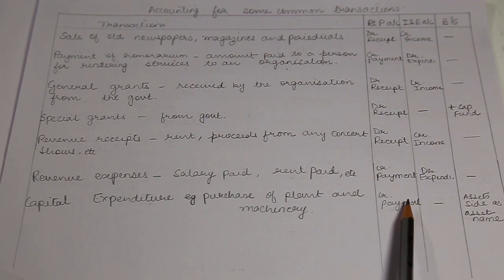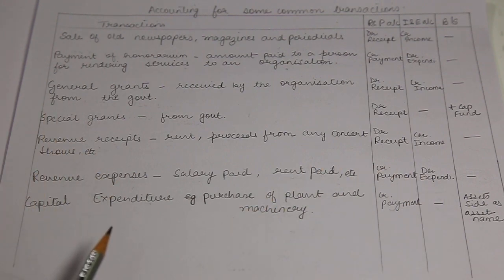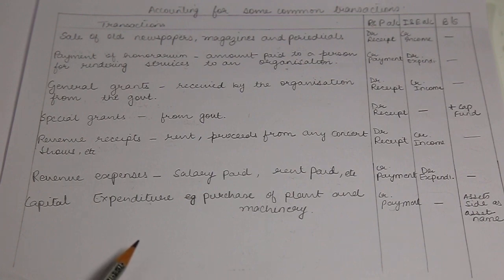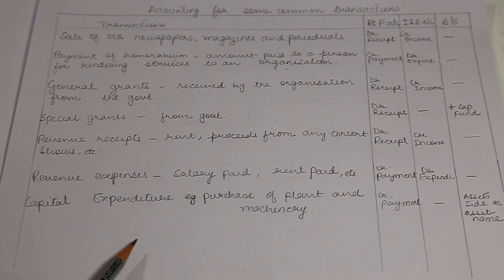I hope all these transactions and their accounting treatment are completely clear. Understanding all these transactions is very important before starting with any sum on income and expenditure account. In the next tutorial, we will look at subscriptions and some specific accounting transactions so that you are completely clear before starting with the income and expenditure account. Without this understanding, we won't be able to make entries in the income and expenditure account. In case of any doubts, you can always put them in the comment section — I'll personally go through them and try to resolve as many as possible. Thank you for watching.